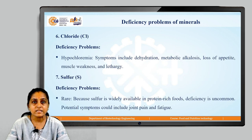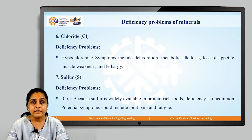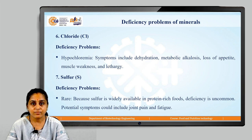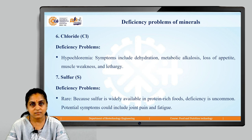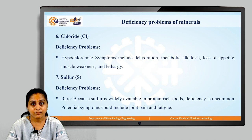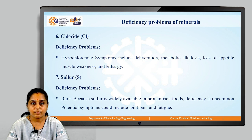The next mineral is chloride. The deficiency problem associated with chloride is hypochloremia, with symptoms including dehydration, loss of appetite, muscle weakness and lethargy. Deficiency problems associated with sulphur are rare because sulphur is widely available in protein-rich foods. Potential symptoms if deficiency occurs could be joint pain and fatigue.